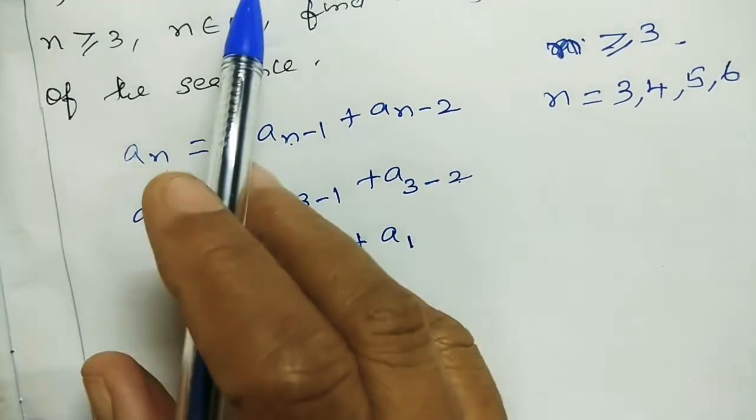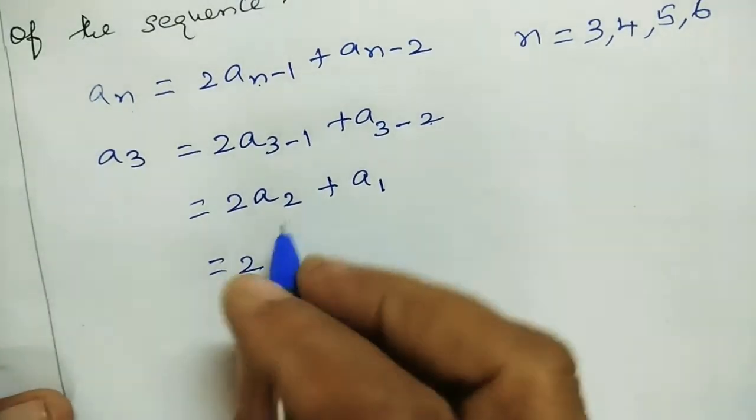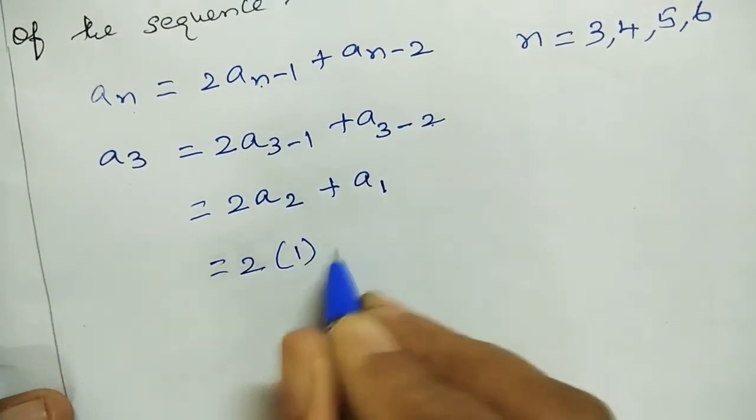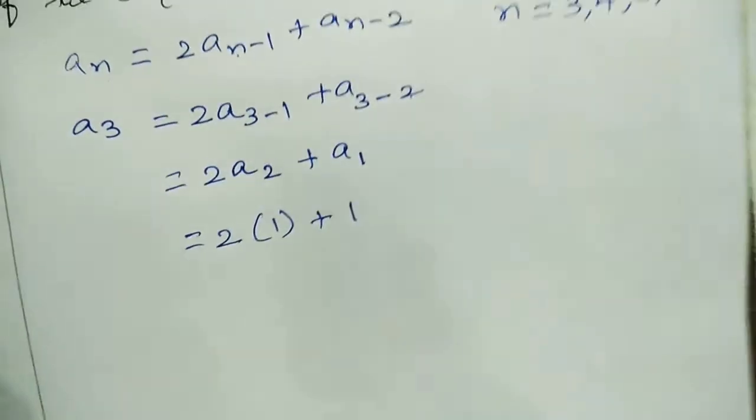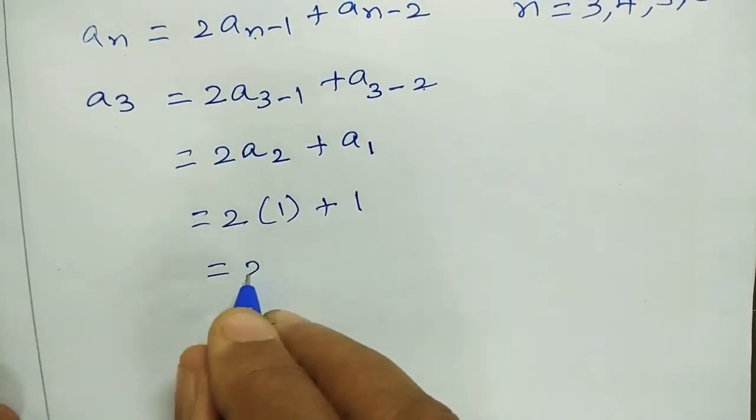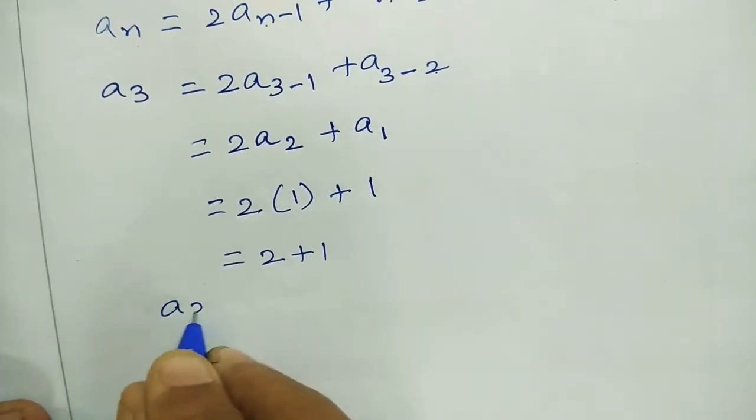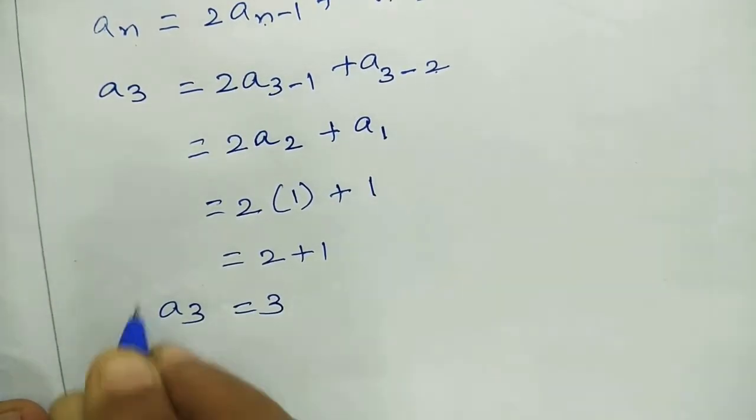a3 equals 2 times a2 plus a1. We have a2 equals 1, so a1 is 1. We can substitute: 2 times 1 is 2, plus 1. 2 plus 1 is 3, so a3 has value 3.